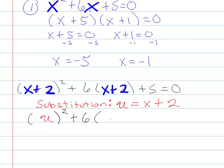And then plus 6, instead of putting x plus 2, I'm going to put u plus 5 equals 0. So I've got u squared plus 6u plus 5 is 0. And check it out! I now have essentially this problem up here.